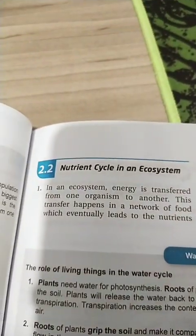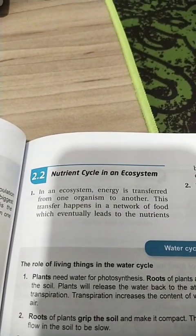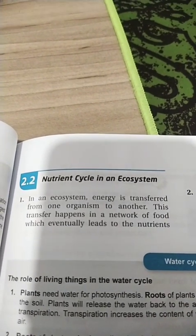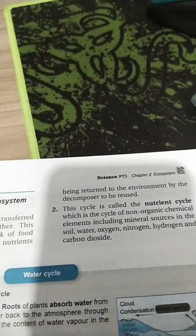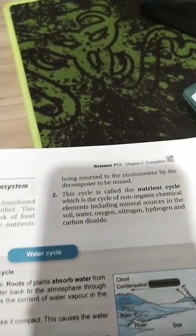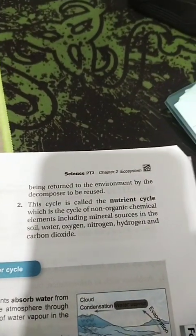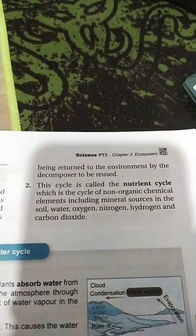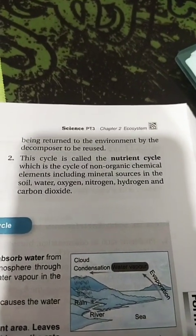Nutrient cycle in an ecosystem. Energy is transferred from one organism to another. This transfer happens in a network of food which eventually leads to nutrients being returned to the environment by the decomposers to be reused. This cycle is called the nutrient cycle, which is the cycle of non-organic chemical elements including mineral sources in the soil, water, oxygen, nitrogen, hydrogen, and carbon dioxide.